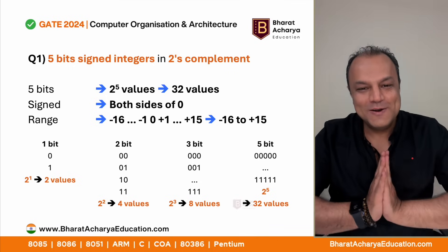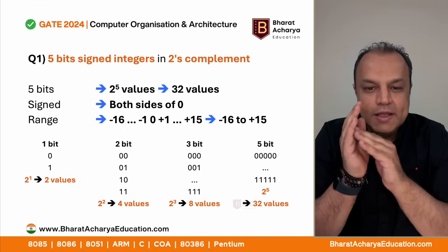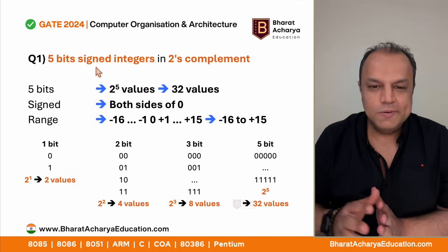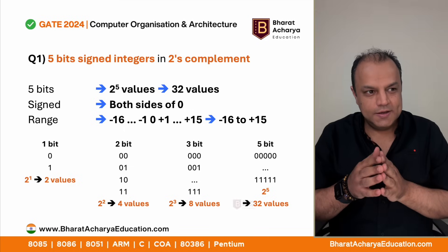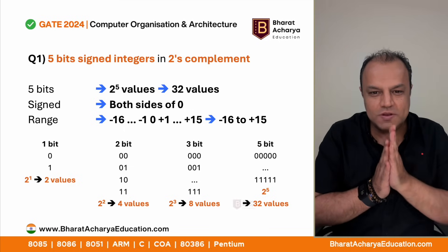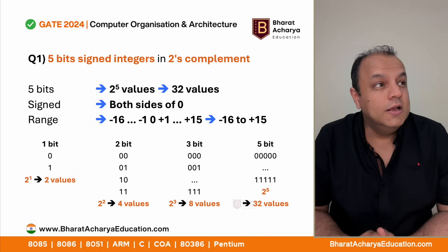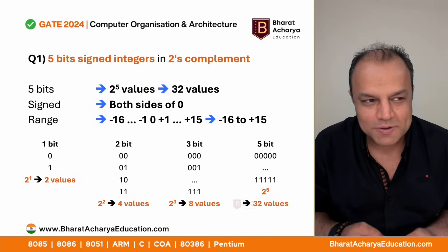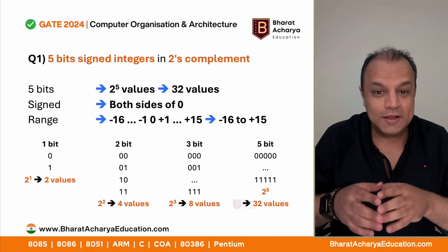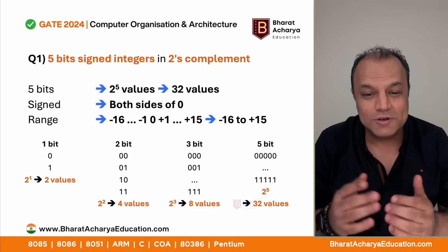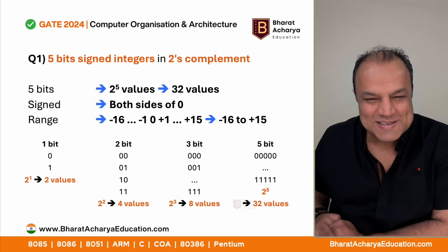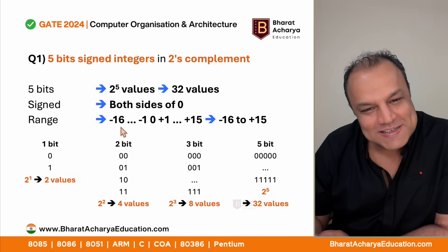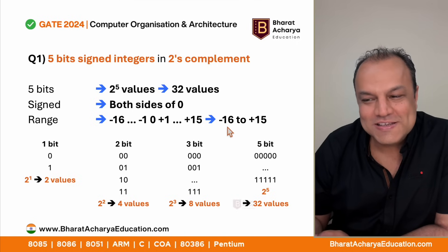It's a five-bit number, whatever you do to it, it will have 32 values. Now, what does signed versus unsigned mean? Unsigned treats every number as positive, so all 32 values are positive - that means 0 to 31. In a signed number, the number can be either positive or negative, on both sides of zero. It's a five-bit number with 32 values, but since it is signed, it has 16 values on each side - 16 positive, 16 negative.